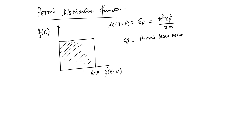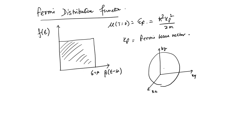If you have N electrons and start putting them in the k_x, k_y, and k_z directions uniformly, filling states according to the Pauli exclusion principle, and keep filling these N fermions growing isotropically from the origin, you get a Fermi surface which is spherical in shape. That Fermi surface has a radius given by k_F, which is called the Fermi wave vector.